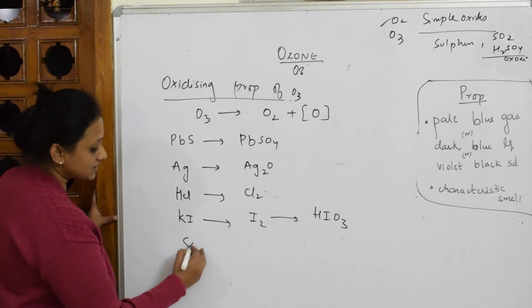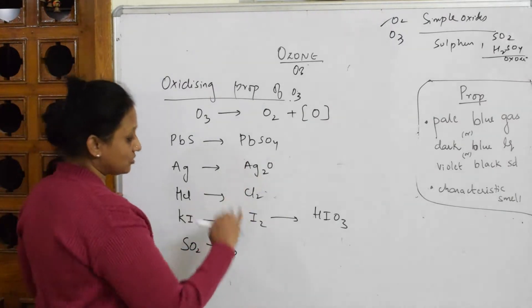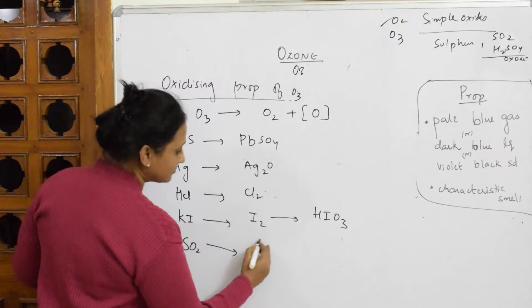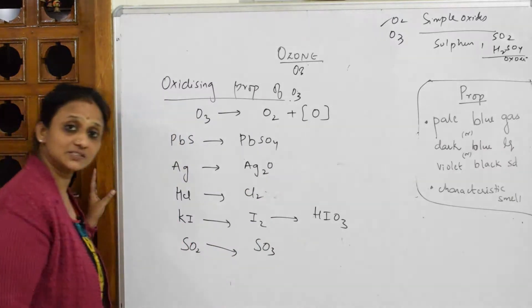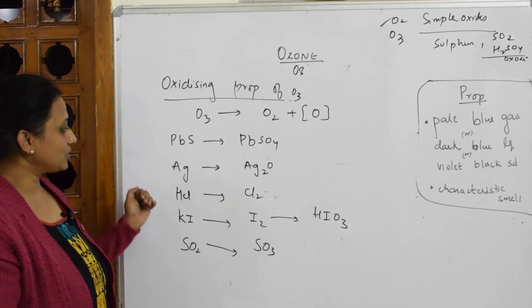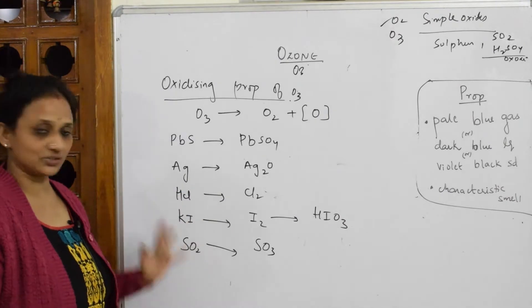If I have to take sulfur dioxide, sulfur dioxide being an oxidizing agent because of this gets converted to sulfur trioxide. Simple isn't it? So what are we going to do? We are going to show the reactions right now.